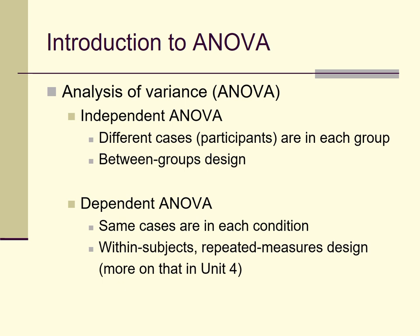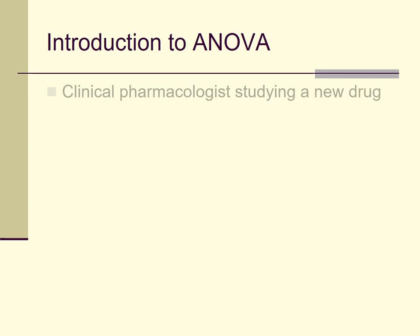I'm not going to talk much about repeated measures ANOVAs in this unit — unit three. I'll be talking a lot about them in unit four, which is coming up. So let's consider a rather generic example of an independent ANOVA or independent factorial design.